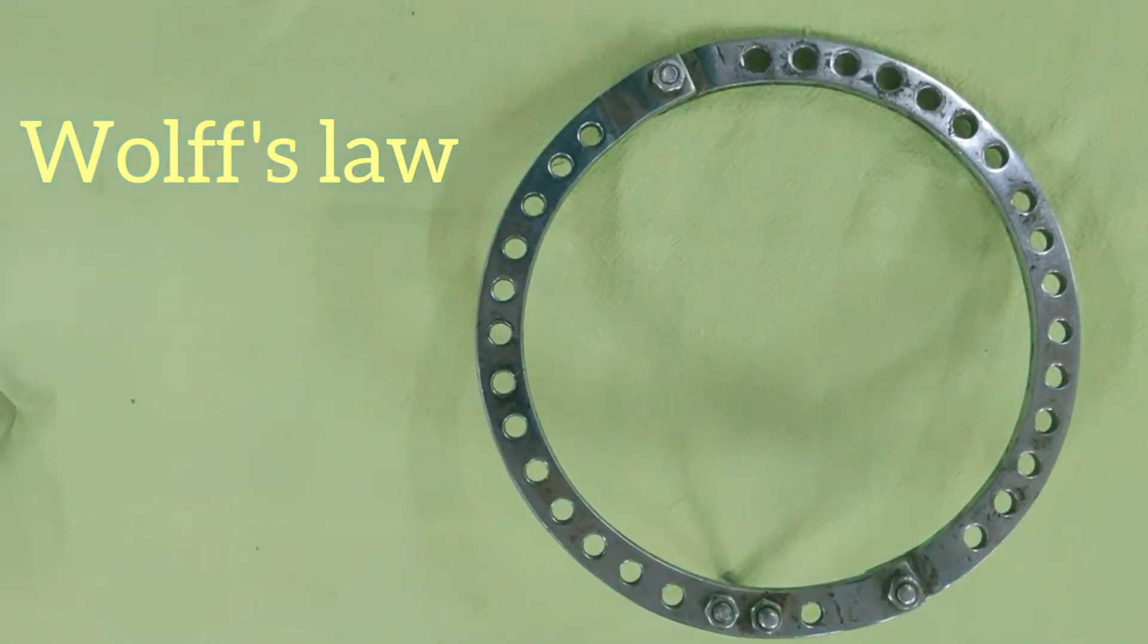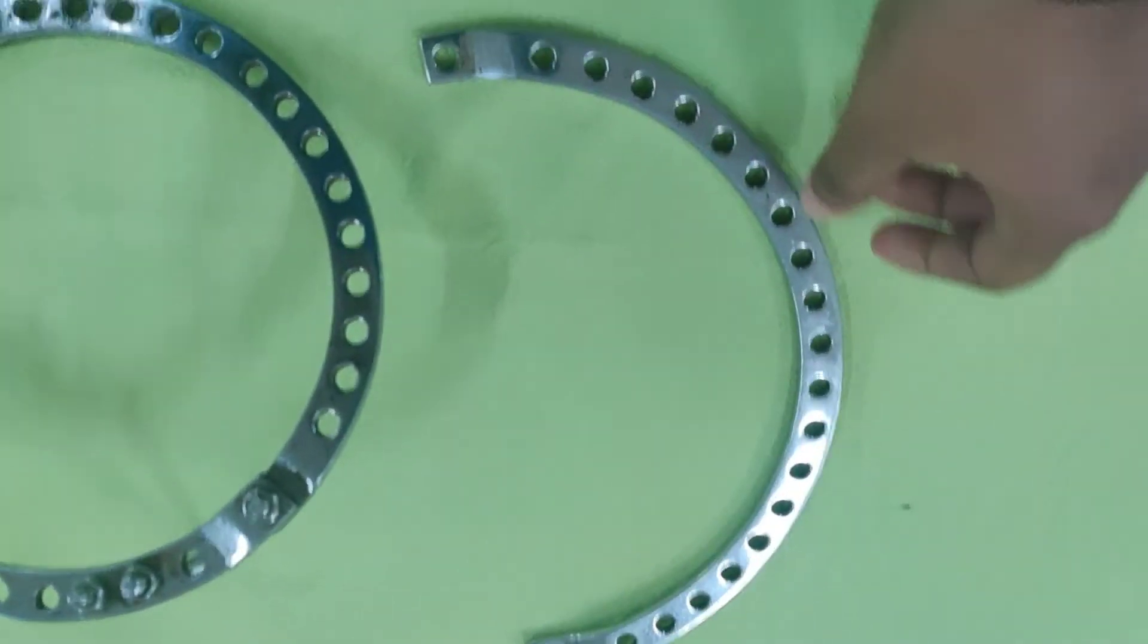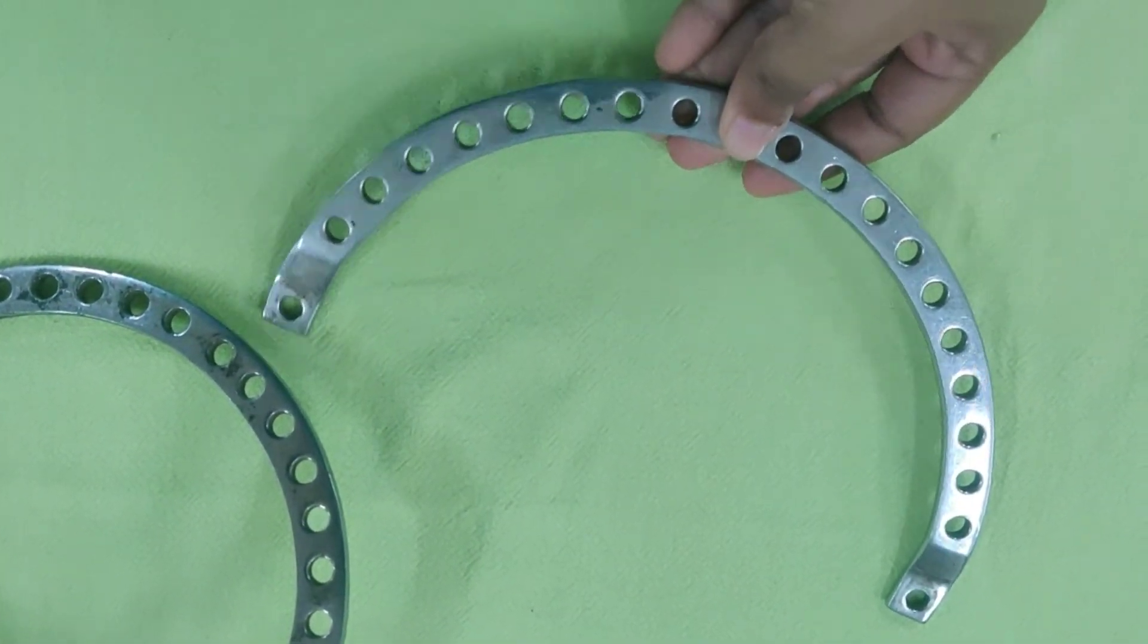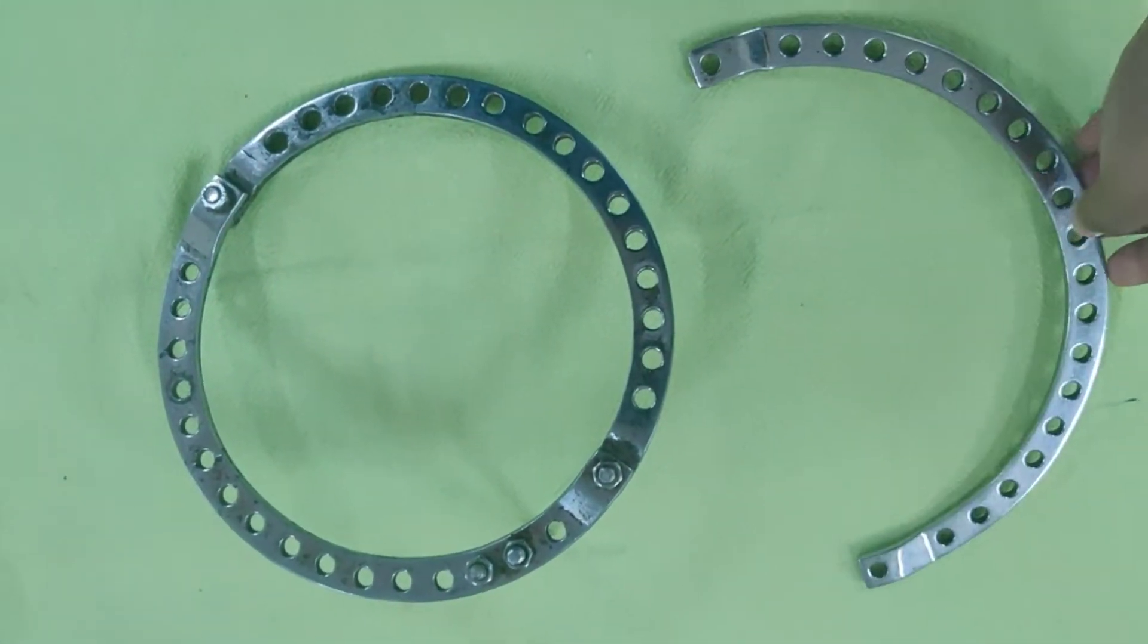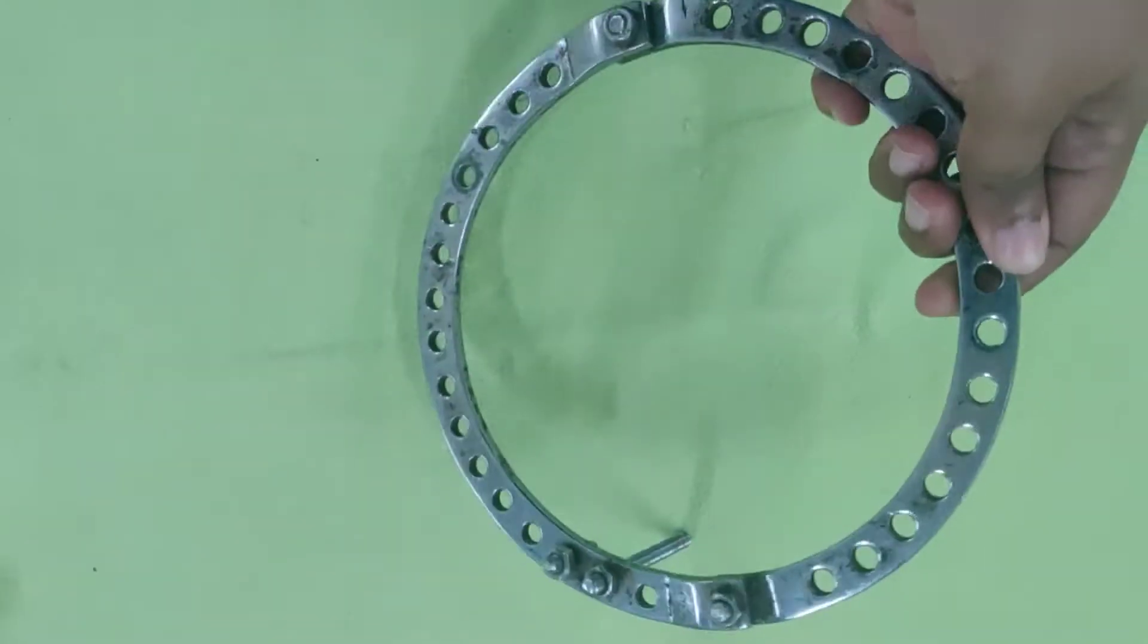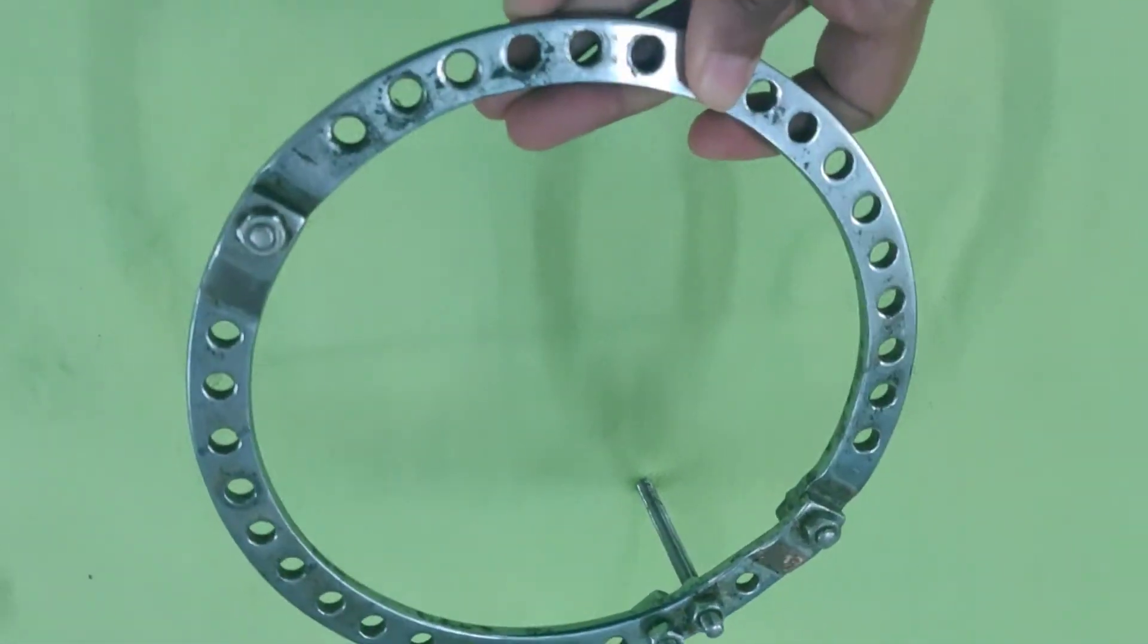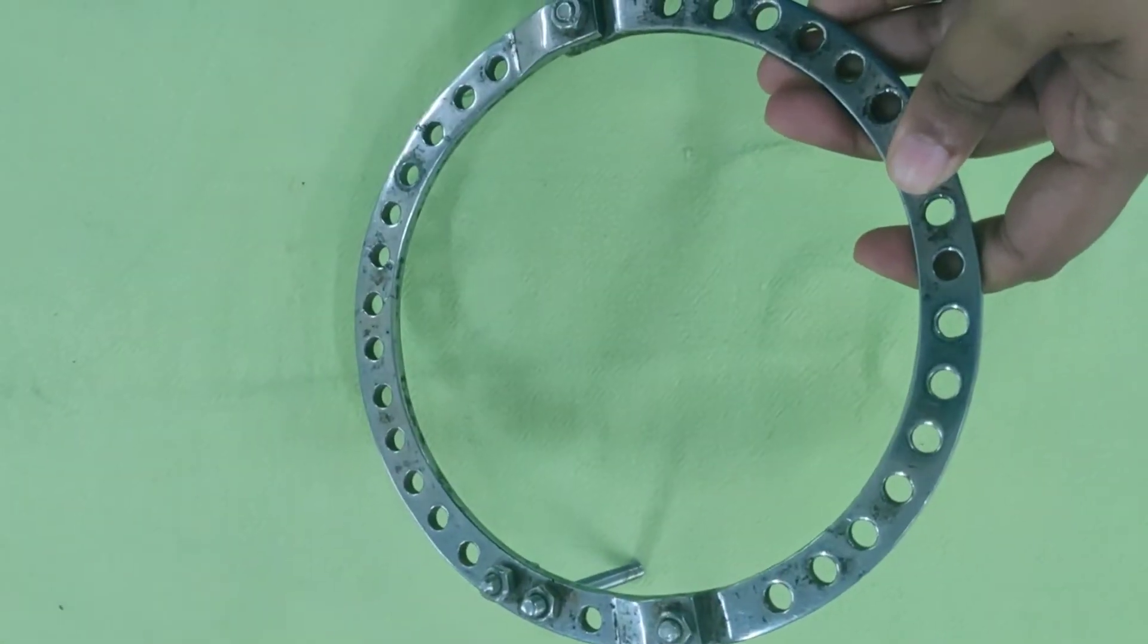This Ilizarov external frame produces a continuous distraction force which can lengthen or correct the deformities of bone. So the mechanism is distraction osteogenesis which is defined as a biological process of new bone formation between surfaces of two segments of bone that are gradually separated by incremental traction. And the distraction is 1 mm per day in 4 intervals of 0.25 mm.